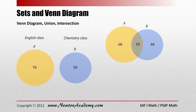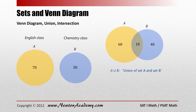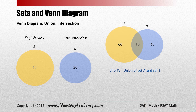Now let me introduce two symbols. The first one is A∪B — it looks like a cup, so I call it that way. It is the union of set A and set B. In our case, it represents the total number of students when we combine the two classes, so we have 60 plus 10 plus 40, which is 110.